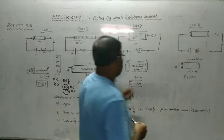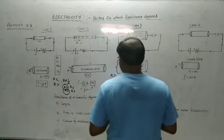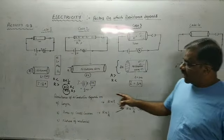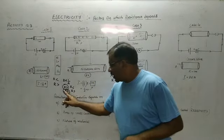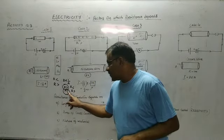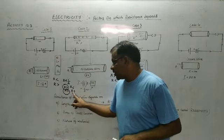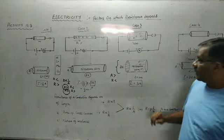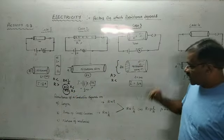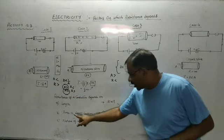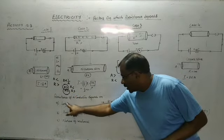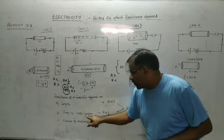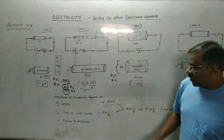A thicker wire will offer less resistance to the flow of current, whereas a wire with less area of cross-section will offer more resistance.